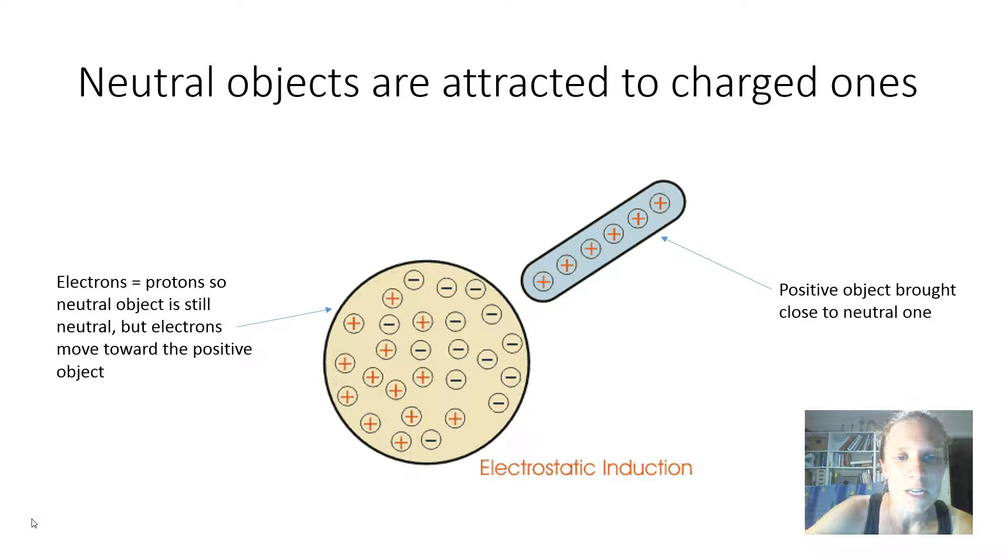Because the electrons equal the protons, the yellow object is neutral. But the electrons will move toward the positive rod, giving one side of our neutral object a negative charge. In that way, our round yellow neutral object will be attracted to our positive object even though it hasn't got a charge itself. Now we haven't got a diagram to illustrate it, but exactly the same thing can happen.